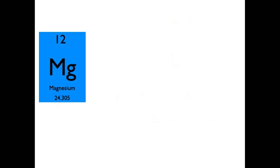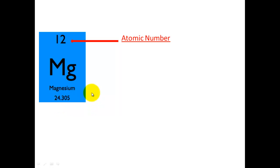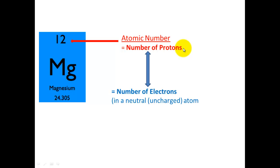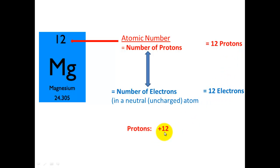Let's have a look at magnesium. Magnesium is always written with two numbers: the top number is the atomic number, and the bottom number is the mass number. The atomic number equals the number of protons, which in a neutral or uncharged atom is also equal to the number of electrons. So magnesium has 12 protons, 12 electrons, a positive charge of 12, a negative charge of 12, and an overall charge of 0.